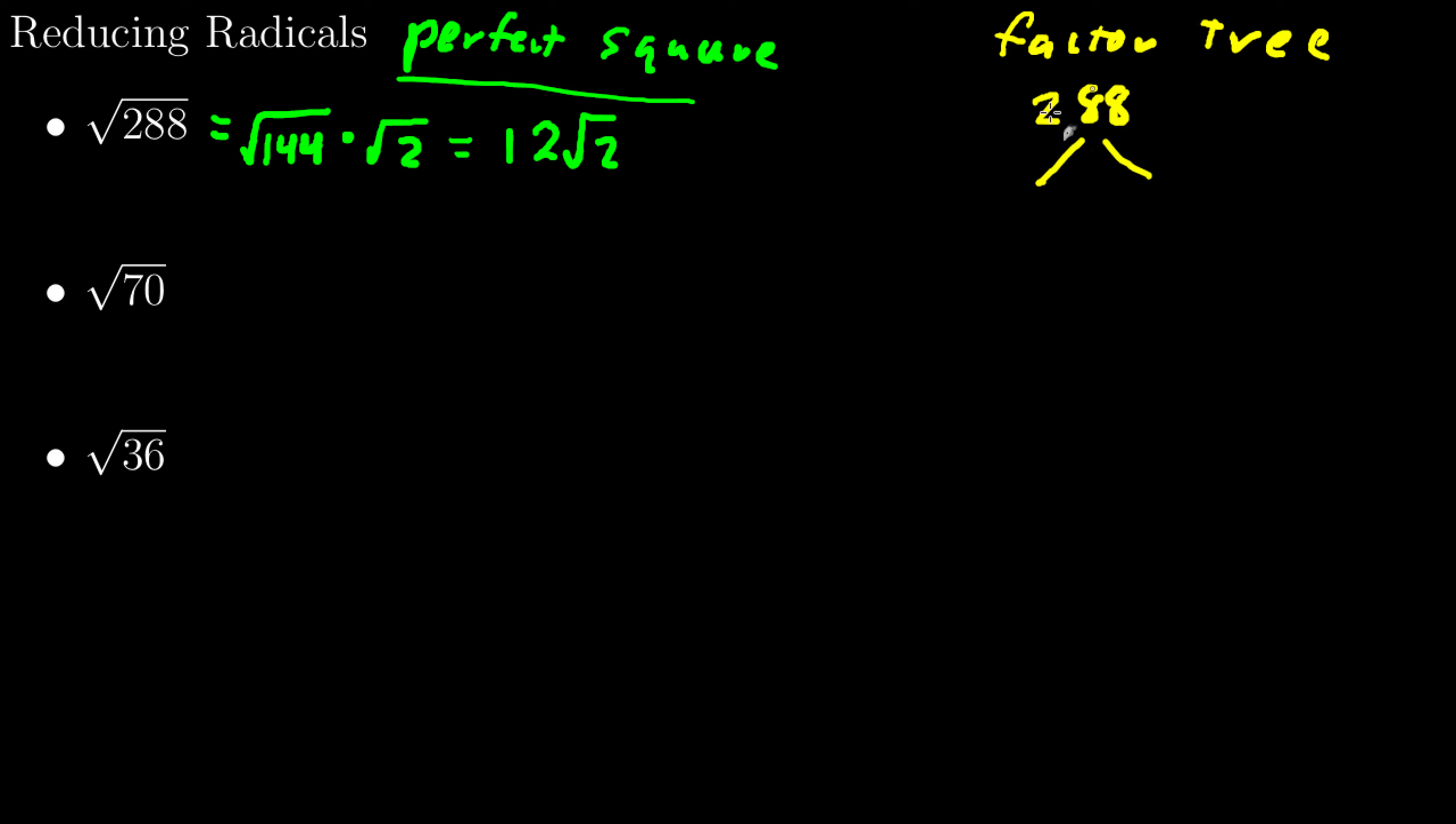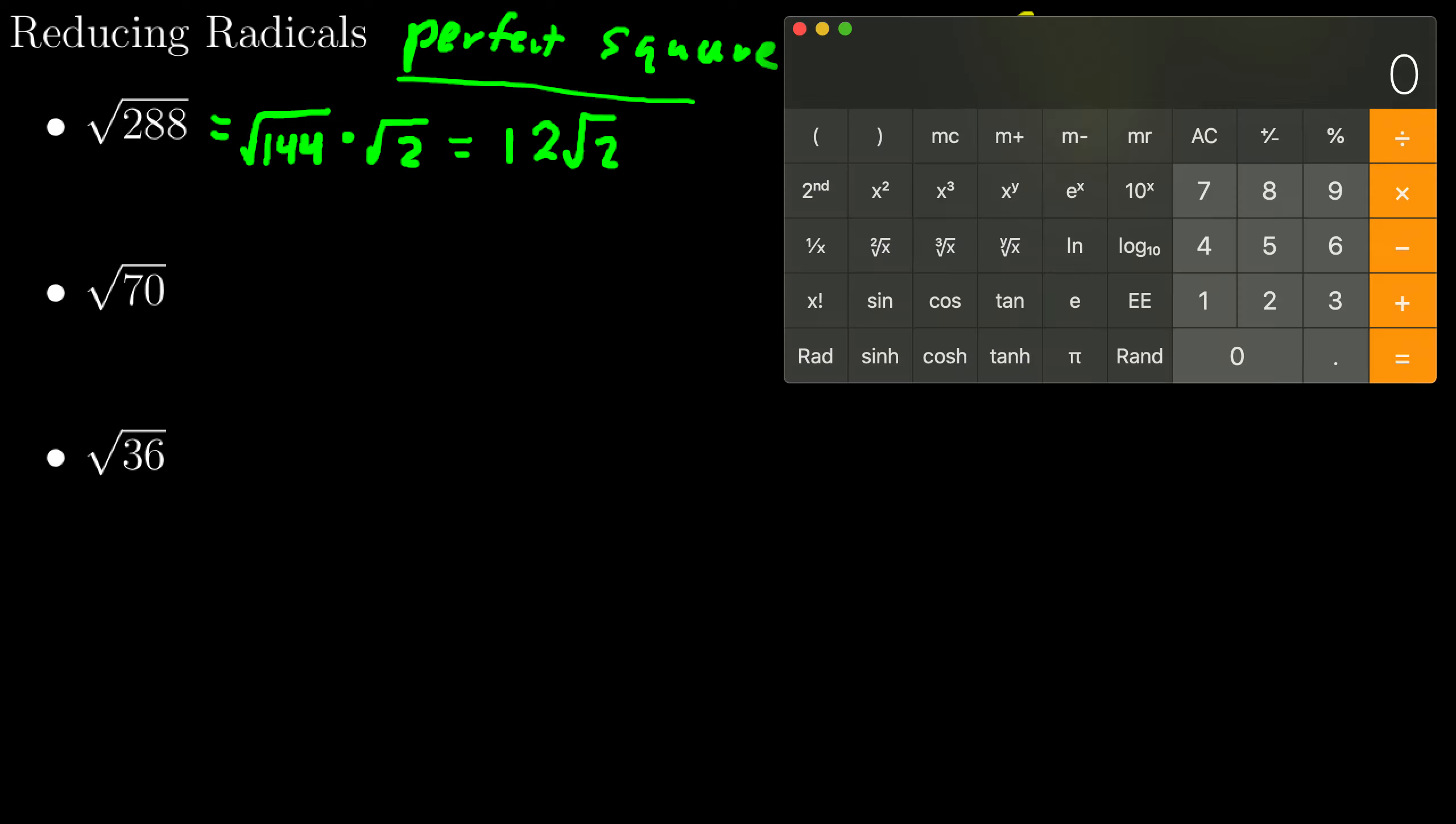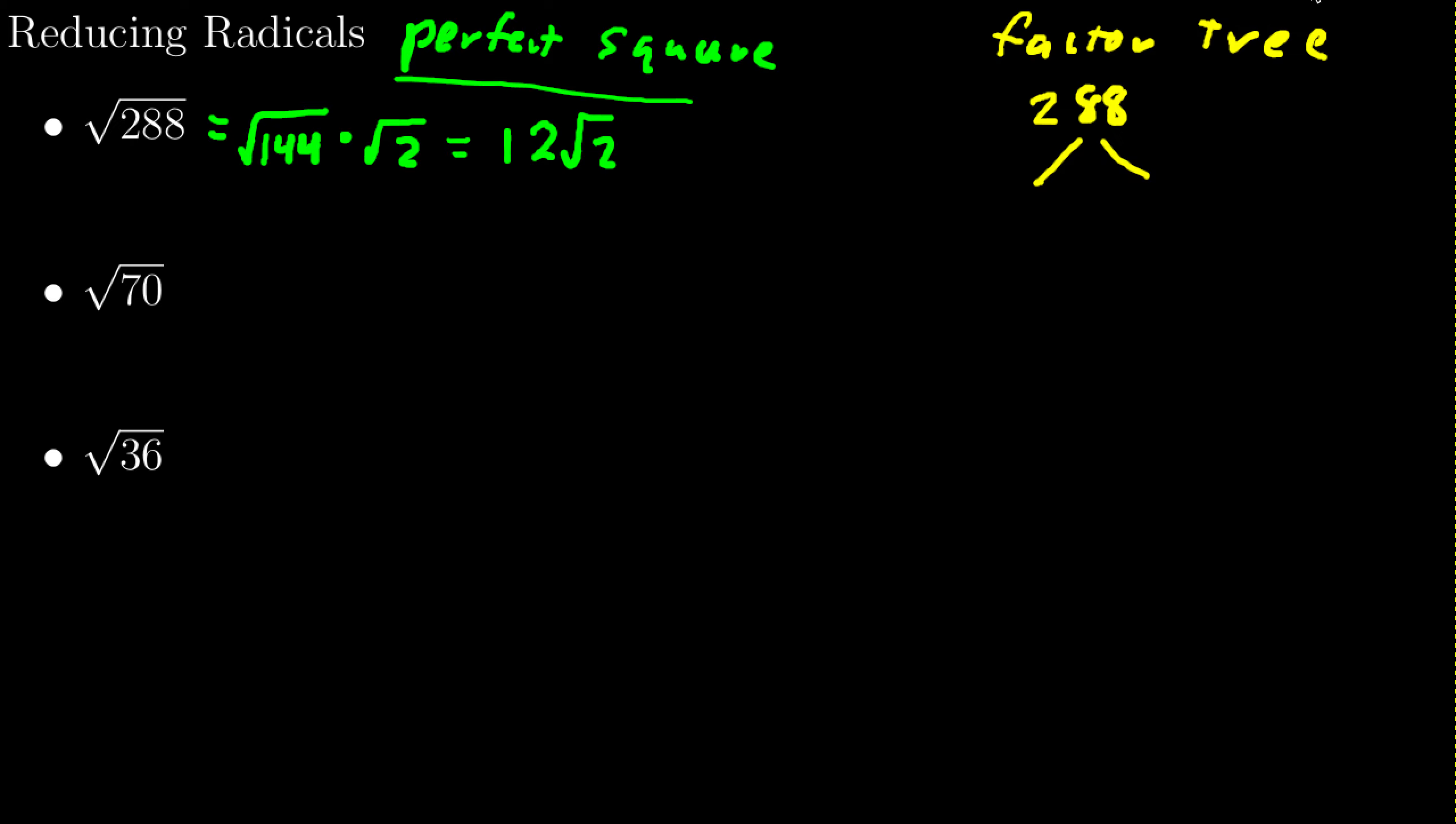They'll take the 288 and they'll break it down as far as they can. And so I try a few things. Well, let's see. What do I know goes into 288? And I can grab a calculator and say, okay, let's see if 2 goes into 288. So I can divide by 2. And I get 144. Okay, great. So I have 2 and 144. 2 is prime, so I will circle it. And I continue.